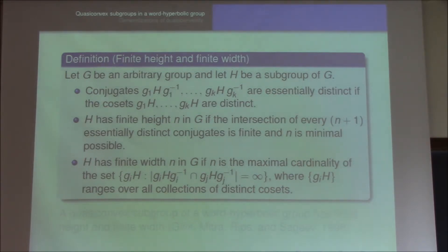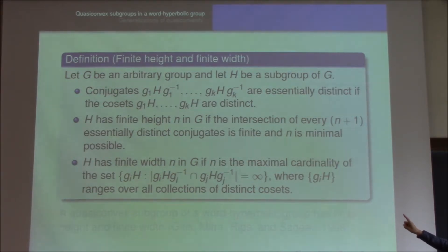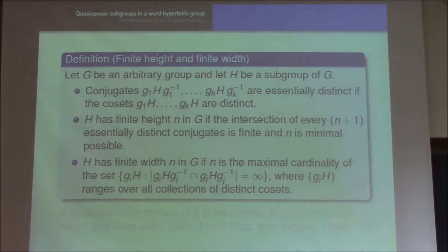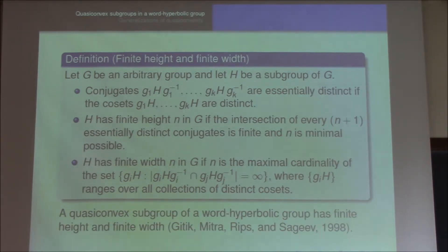We say that H has finite width if N is the maximal cardinality of a collection, where a collection ranges over all collections of distinct cosets such that the intersection of any two cosets is infinite. A finite subgroup has finite height and finite width, and a subgroup of finite index has finite height and finite width. However, an infinite normal subgroup of infinite index doesn't have finite height and finite width. It turns out that a quasi-convex subgroup over a word hyperbolic group has finite height and finite width.